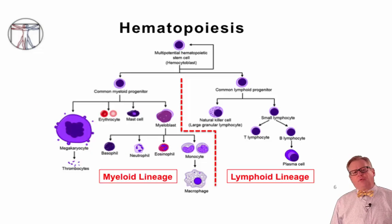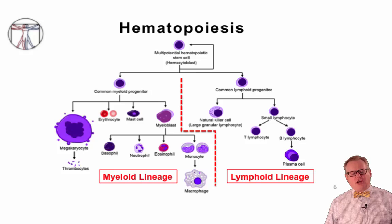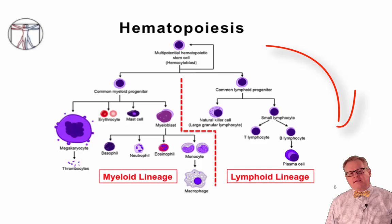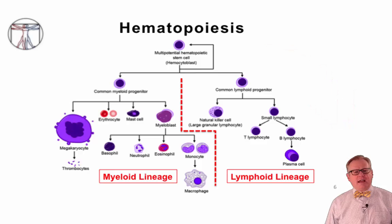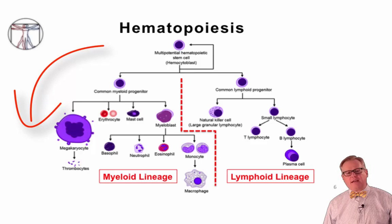It's worth beginning with a brief review of hematopoiesis. Hematopoiesis begins from a common progenitor, a hematopoietic stem cell, and these cells develop into two major lineages in the bone marrow. One is the lymphoid lineage, which includes the B cells, T cells, and NK cells. The second is the myeloid lineage, which includes the red blood cells, platelets, and other white blood cells including the phagocytes such as neutrophils and monocytes, and the basophils and eosinophils.